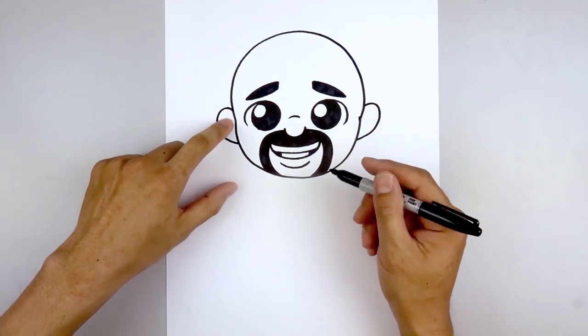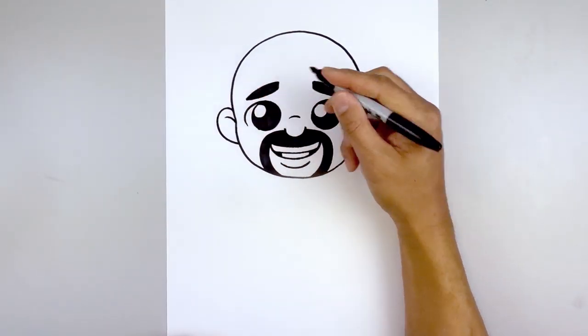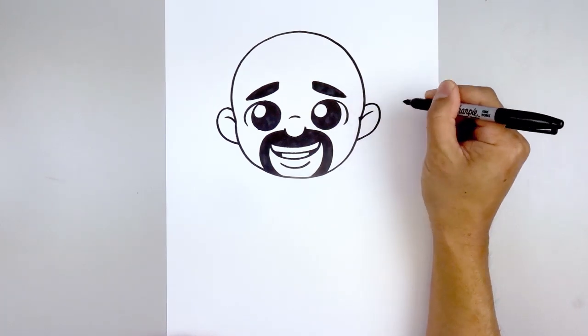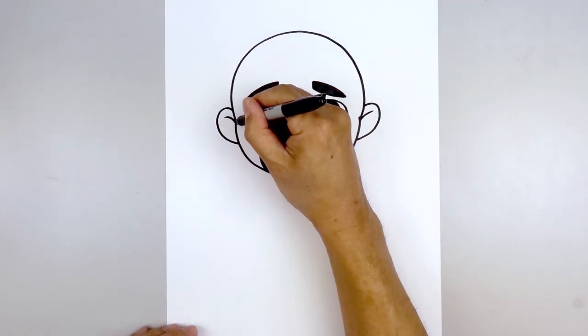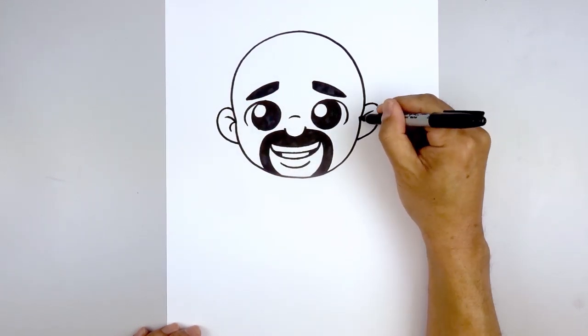Now we're going to add the fold in the ears. Starting at the top of the cheek, curve up and out. Do the same thing on the right. Now let's go back to the inside — we're going to draw a curve going out and hooking that back in.